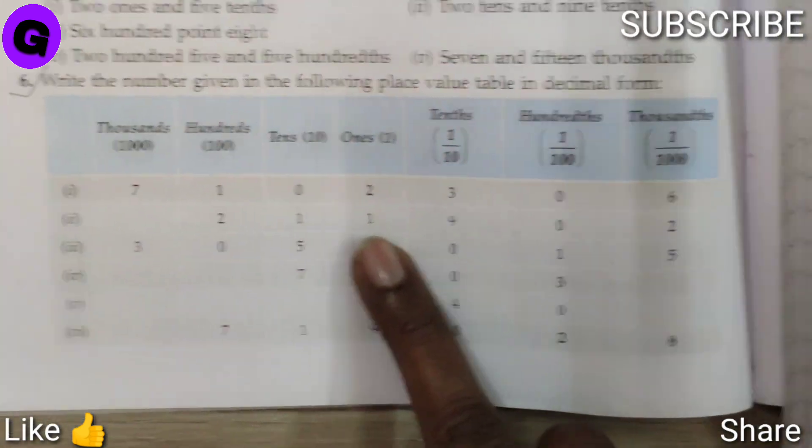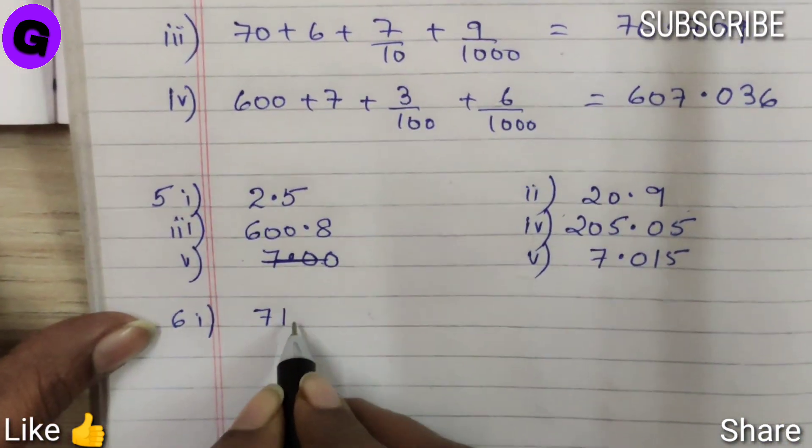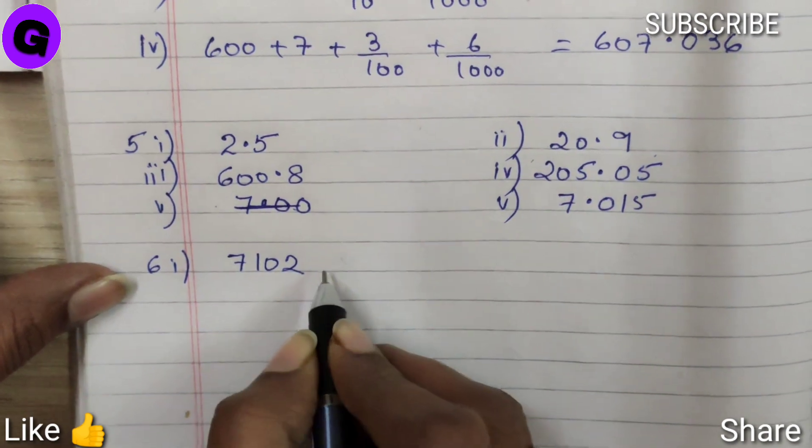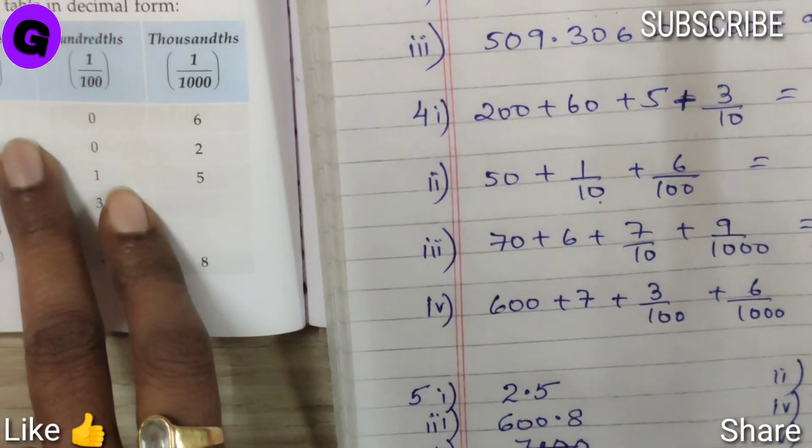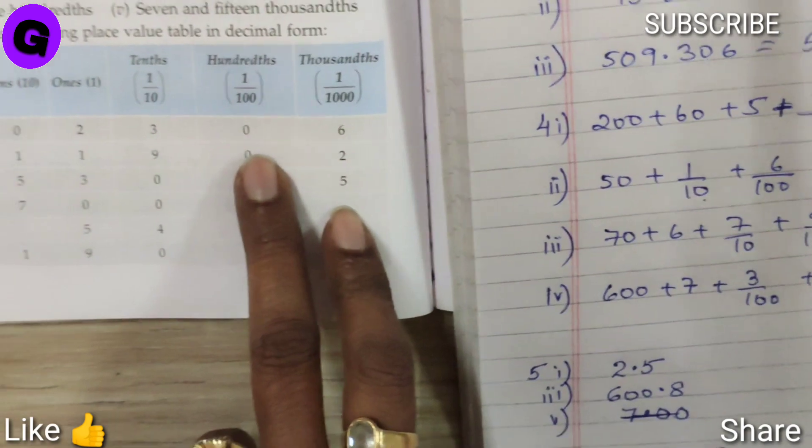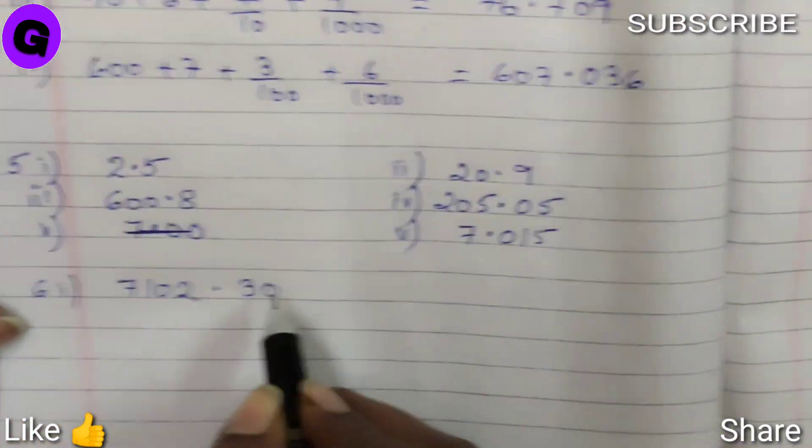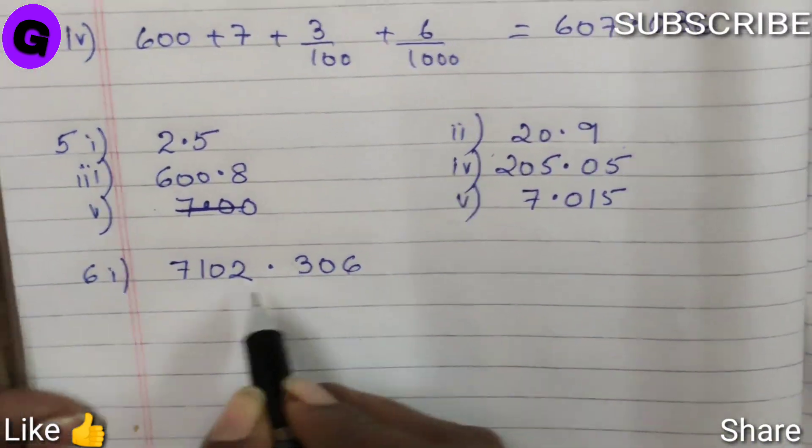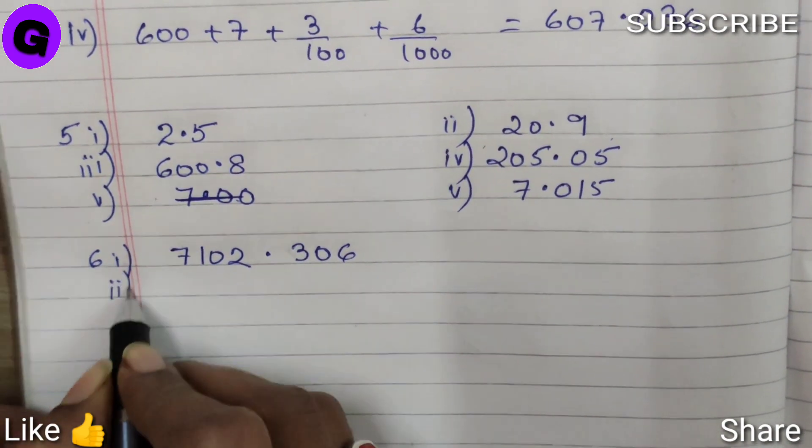Number 1, 7102. Let me write 7102 point. Now at tenths place they have 3, hundredths place is 0, and thousandths place is 6. This is the answer.